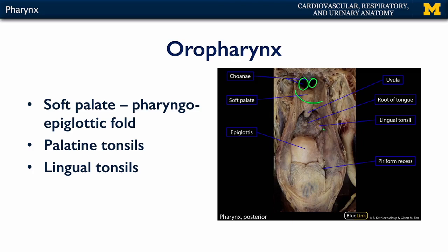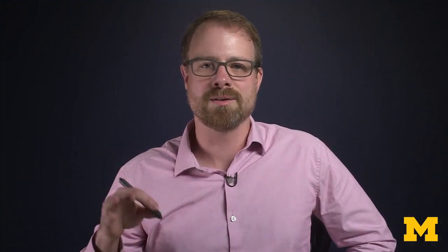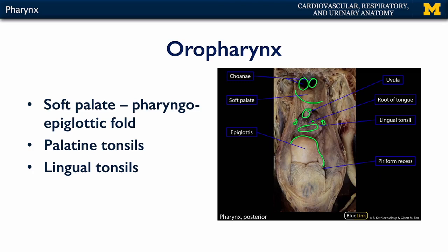Below the line of the soft palate is the oropharynx, which extends inferiorly to the pharyngoepiglottic fold and superior portion of the epiglottis. Within the oropharynx we have a uvula, palatine tonsils in their tonsillar fossa laterally, and the lingual tonsils. The tonsils form a complete ring around the pharynx: superiorly the adenoid or pharyngeal tonsil, laterally the palatine tonsils, and inferiorly the lingual tonsils.